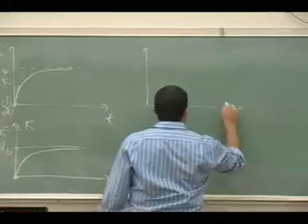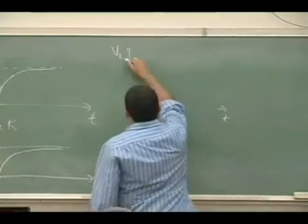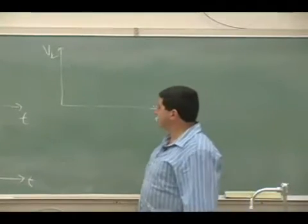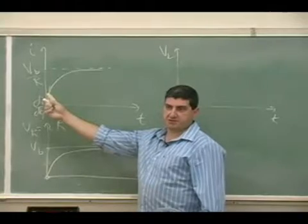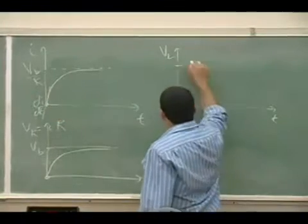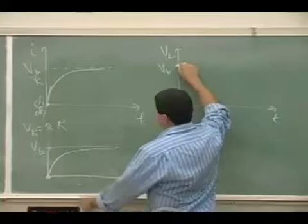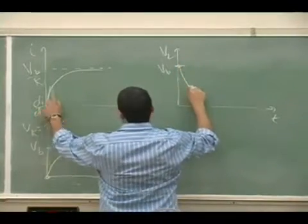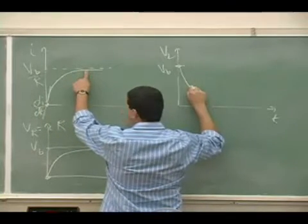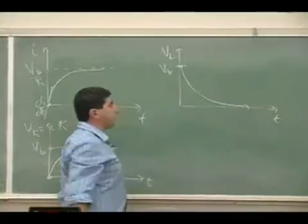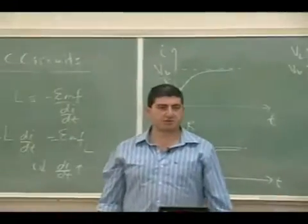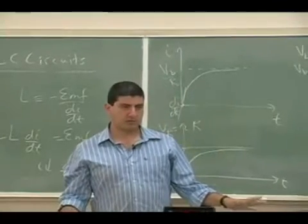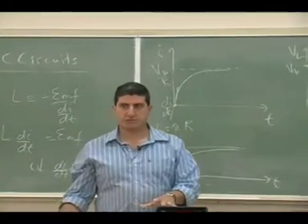What should the voltage of the inductor look like? It should look like the derivative of the current graph. Initially it's high — equal to V_battery — and then it goes down. As the current plateaus, the derivative approaches zero. So the final voltage of the inductor is zero. After a while, when the inductor gets used to the steady current, it doesn't resist much.